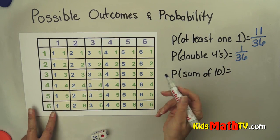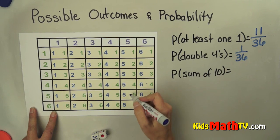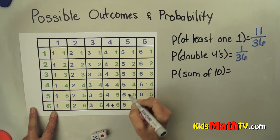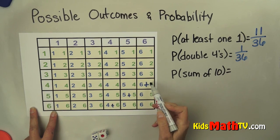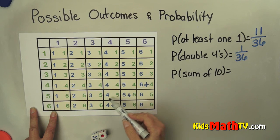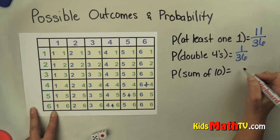I can see that I can get 6 plus 4 is 10, 5 plus 5 is 10, and 4 plus 6 is 10. Actually, I'll make that a plus so it doesn't look like multiplication. So there are 3 possible outcomes.